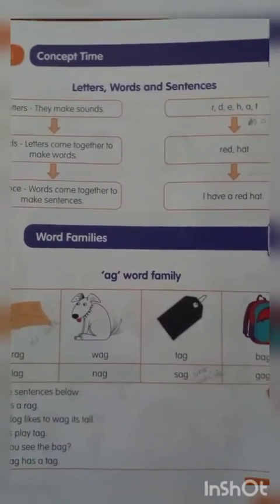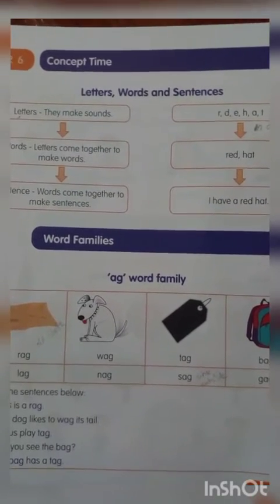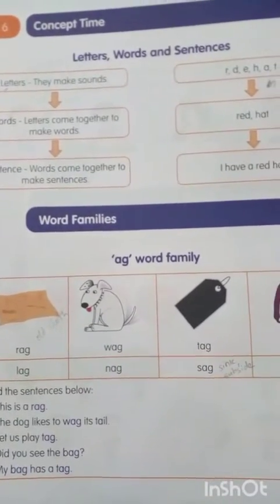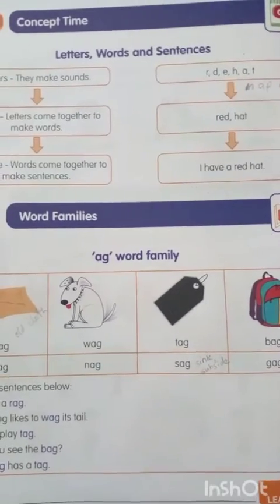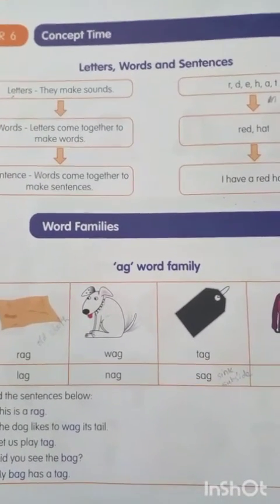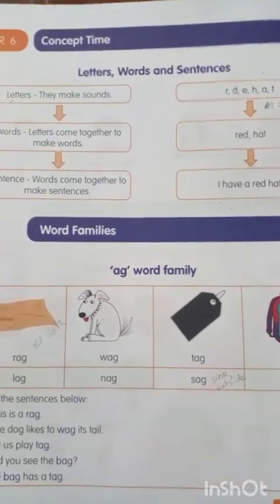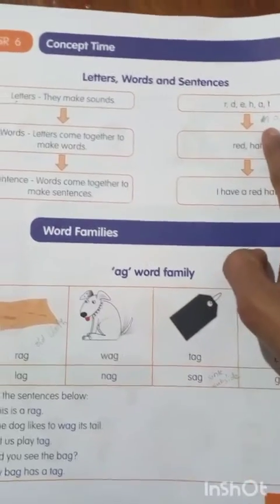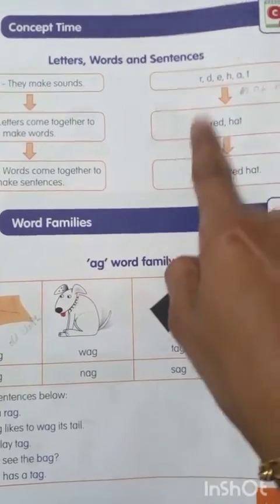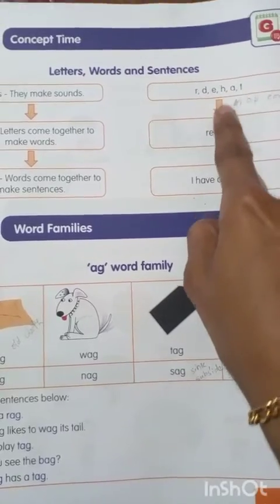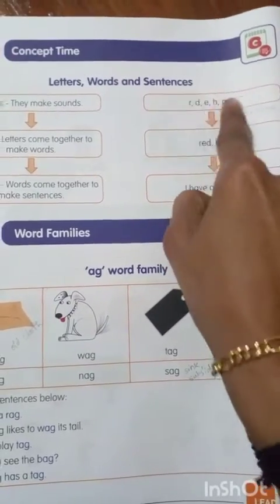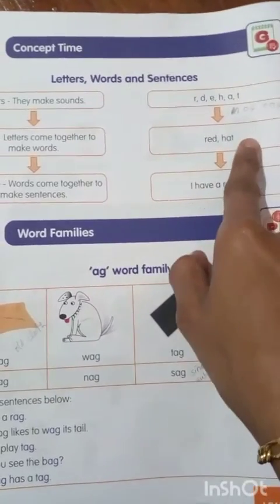In concept time, we also learned letters, words, and sentences. Letters make sounds — for example, R, D, E, H, A, T. Letters come together to form a word. What I asked is: with these letters, you should make words. For example, R for something, D for something — but you should form words, not just write letters for each.